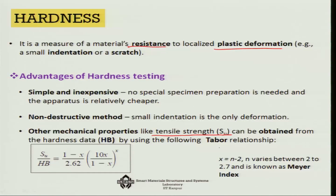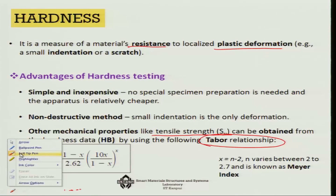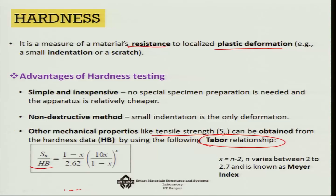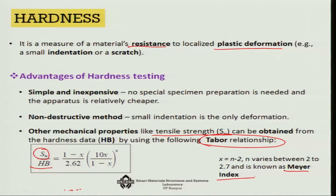For metals, there is something called the Tabor relationship, in which if you know the Brinell hardness data HB, you can use that data to find out the ultimate tensile strength SU, where x is n minus 2 and n varies between 2 to 2.7. This is also known as the Meyer index.